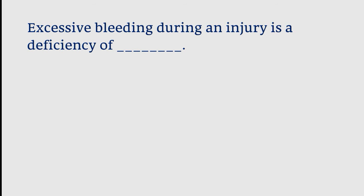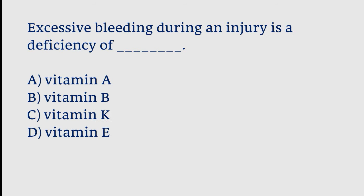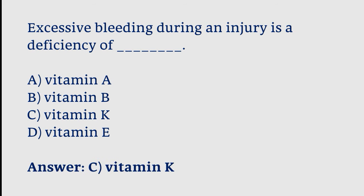Excessive bleeding during an injury is a deficiency of: vitamin A, vitamin B, vitamin K, or vitamin E. The correct answer is option C. Excessive bleeding during an injury is a deficiency of vitamin K.